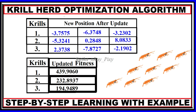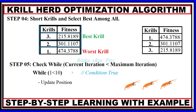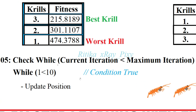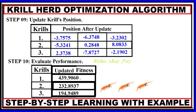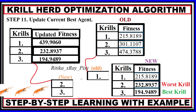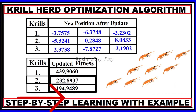We check the stopping criteria again, increment the counter to iteration 2, and since 2 is less than 10, the condition is true and we repeat all steps. When the stopping criteria is met, we display the best solution obtained — in this case, the third krill. That's all about this video; if you have any questions, comment below.